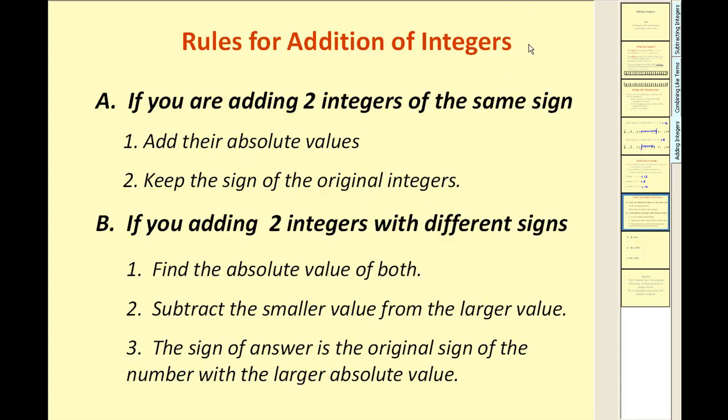here's how many textbooks instruct how to add integers. If you are adding two integers of the same sign, add their absolute values. Keep the sign of the original integers. The key here is when the integers have the same sign, we add.